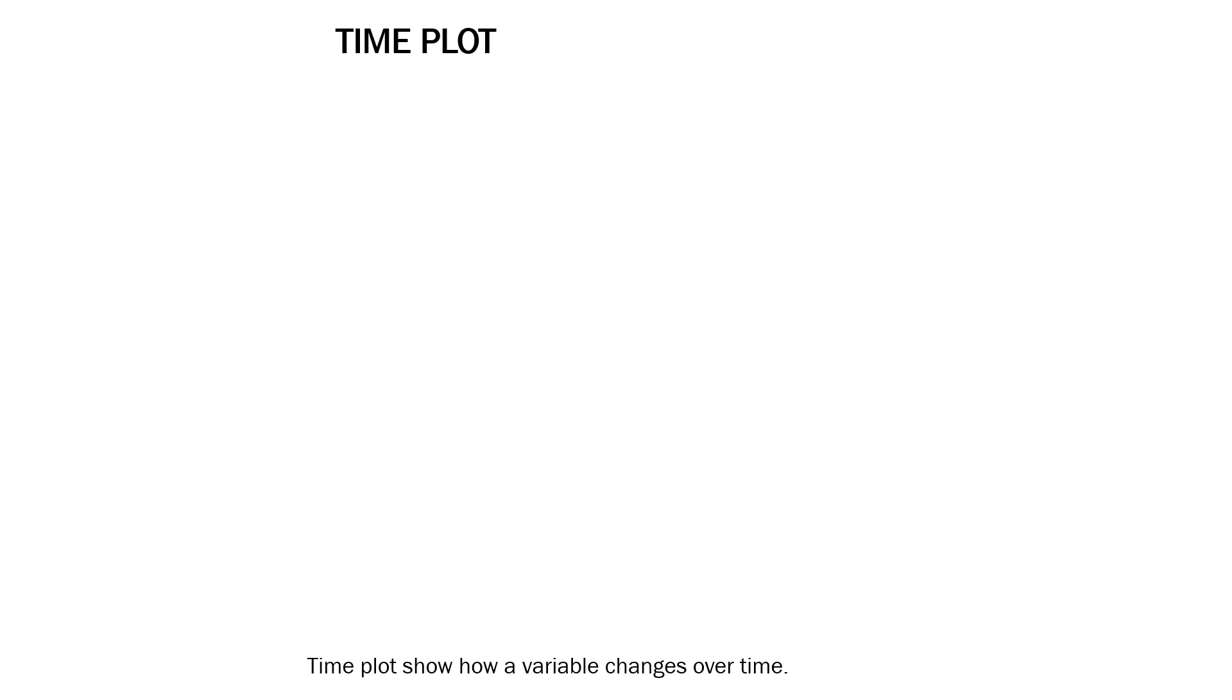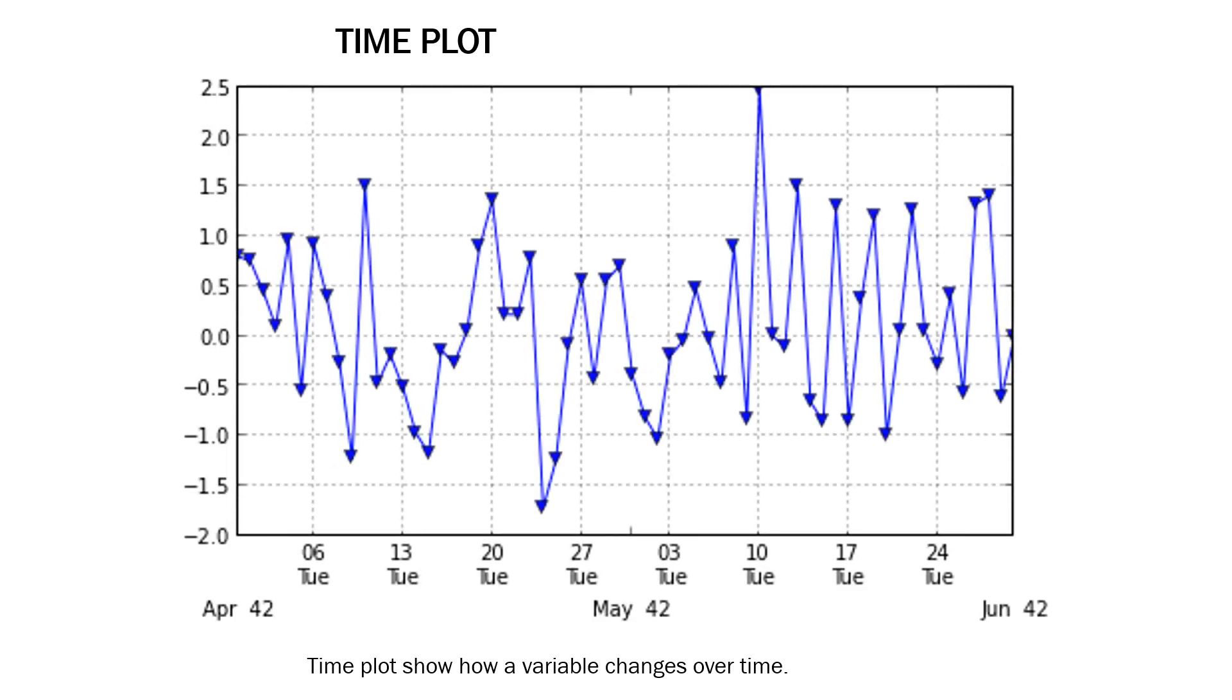The time plot shows how a variable changes over time. When observations on a variable are taken over time, we make a time plot that graphs time horizontally and the values of the variable vertically. A time plot can reveal trends, cycles, or other changes over time.